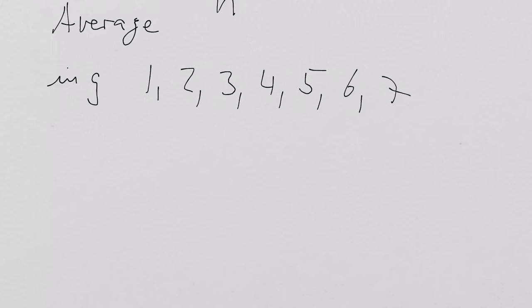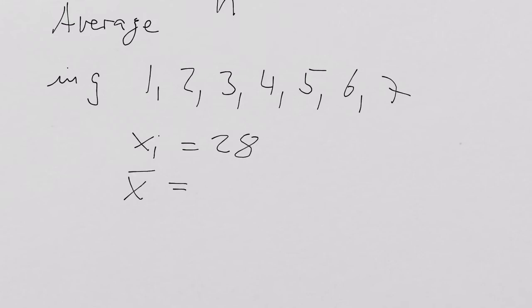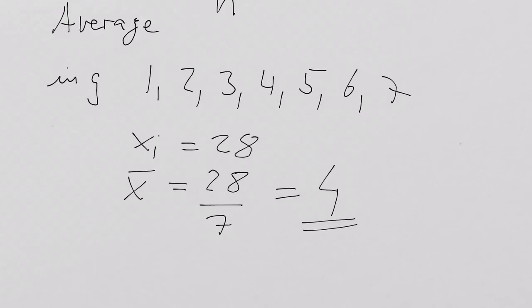How did you do it? You added them all up: one plus two plus three plus four plus five plus six plus seven equals 28, and for x-bar we have 28 divided by seven, and that is four. Absolutely right.